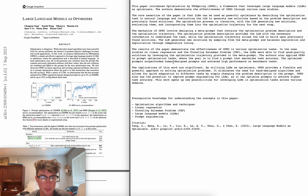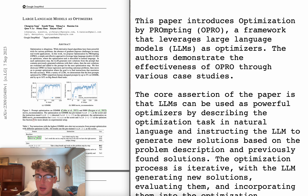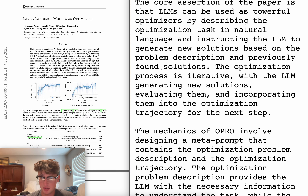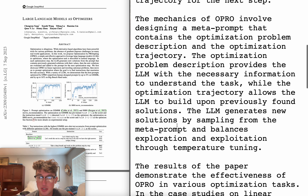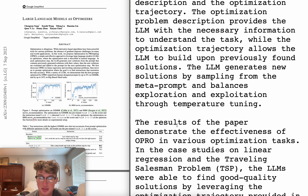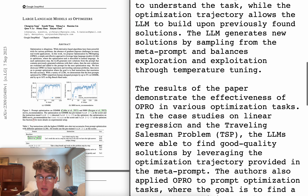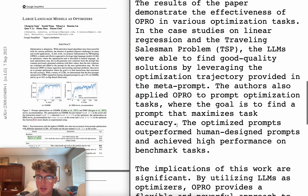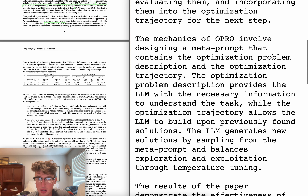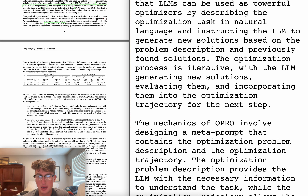Large language models as optimizers. Google DeepMind paper. Introduces optimization prompting, a framework that leverages LLMs as optimizers, demonstrating effectiveness in various case studies. Core assertion is that they can be used as powerful optimizers by describing optimization tasks in natural language and instructing the LLM to generate new solutions. Based on the problem description and previously found solutions, the process is iterative - the LLM generates new solutions, evaluates them, and incorporates them into the optimization trajectory for the next step. They designed a meta-prompt that contains the optimization problem description and the optimization trajectory. Generates new solutions by sampling from the meta-prompts and balances exploration and exploitation through temperature tuning. Results demonstrate effectiveness. This isn't that crazy, I'm not going to lie.